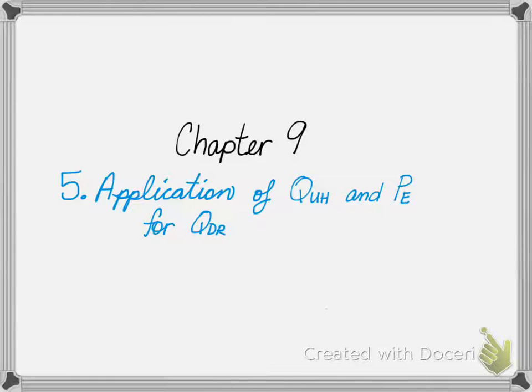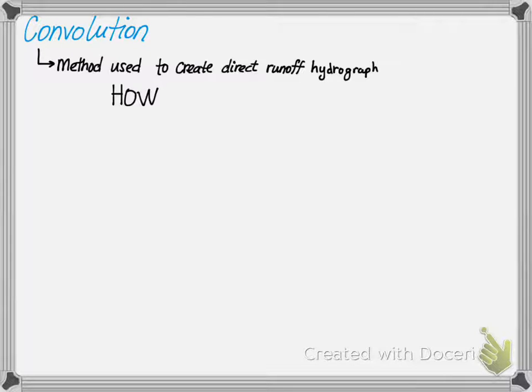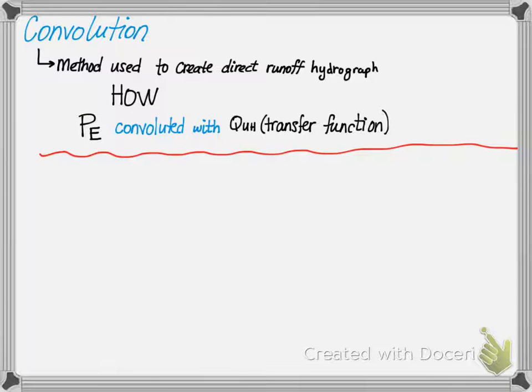To create a direct runoff hydrograph, we need to convolute the excess precipitation with the unit hydrograph. This is done through a process called convolution. Convolution is a method used to create direct runoff hydrographs. How do we do this? It's simple - you take the excess precipitation and convolute it with the unit hydrograph, which is our transfer function.